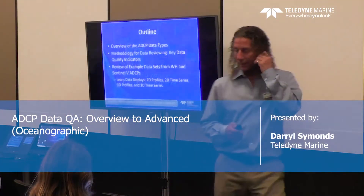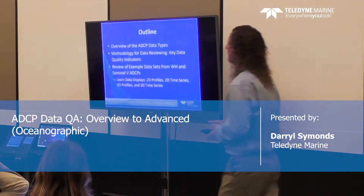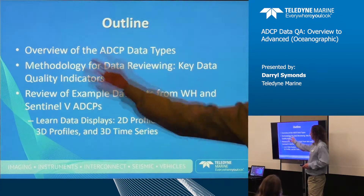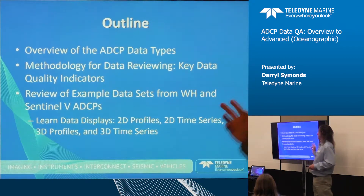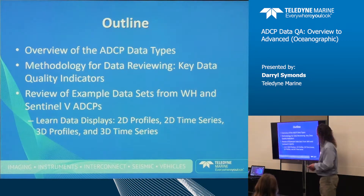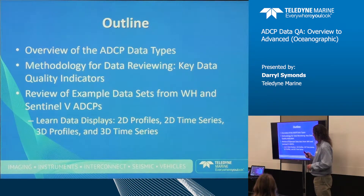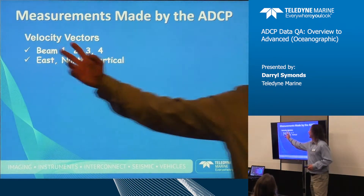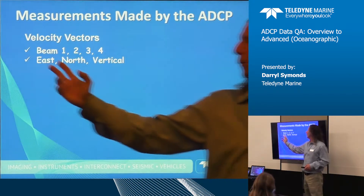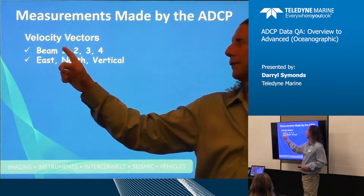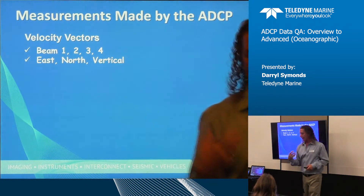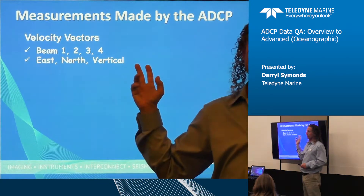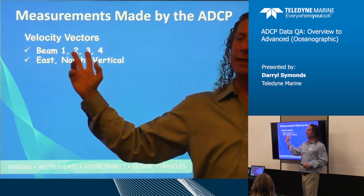This takes us to the data training side of things. I'm going to give you an overview of all the different types of data that we collect, a methodology for data reviewing, and then review a couple of example data sets. We collect velocity data — when I say beam data, that means I'm seeing the velocities of beams one, two, three, and four, and it has not been transformed to east, north, and vertical. This is the raw beam format that we can collect.